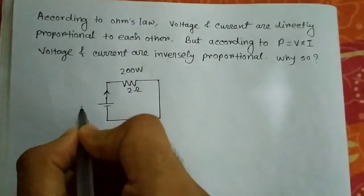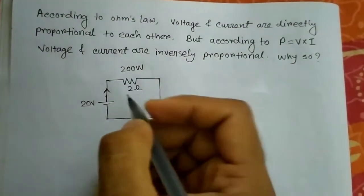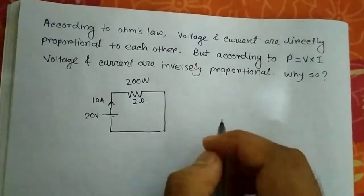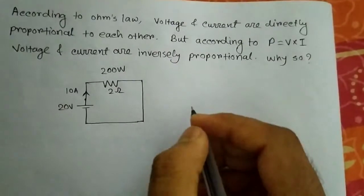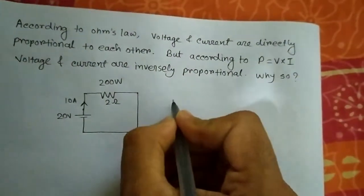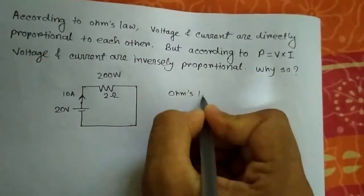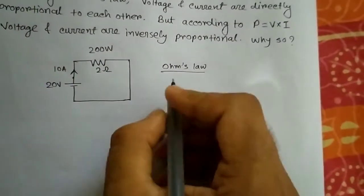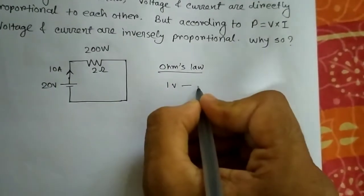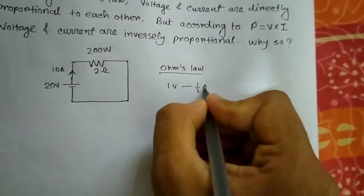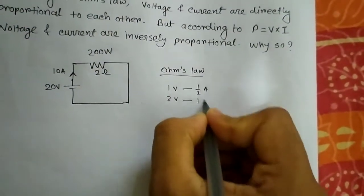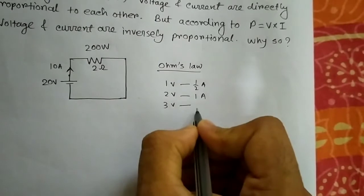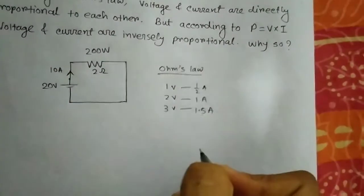According to that, we say that the maximum voltage is 20 volts and maximum current of 10 amperes it can withstand. So we will vary this voltage and current. First, according to Ohm's Law, how did Ohm's Law come? See, according to this concept, if I have 1 volt, then I will have 0.5 amperes of current. If I have 2 volts, then I will have 1 ampere of current. If I have 3 volts, then I will have 1.5 amperes of current.